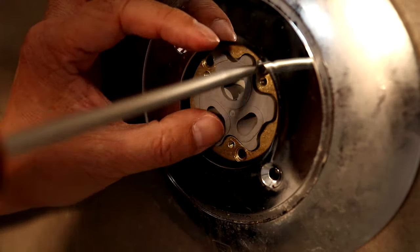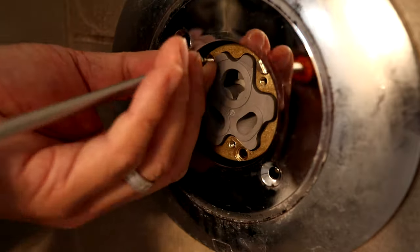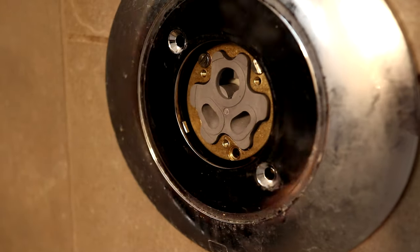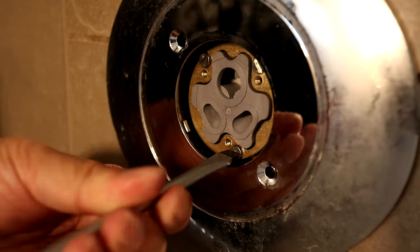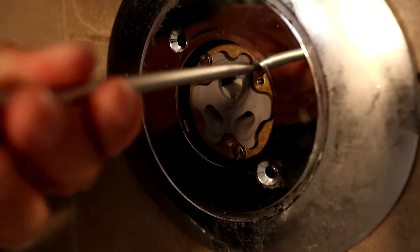Now use the three flat head screws and attach the retaining ring. I recommend tightening each of these a little at a time so you get even pressure as the ring presses the seal of the pressure balancing unit into place.